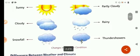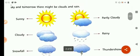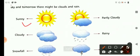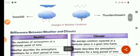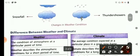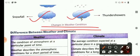Now here children, you can see some weather conditions given to you. It is sunny, partly cloudy, this is showing cloudy day, this is rainy day, here you can see snowfall, and this is thunderstorm. So these are some changes in the weather conditions.